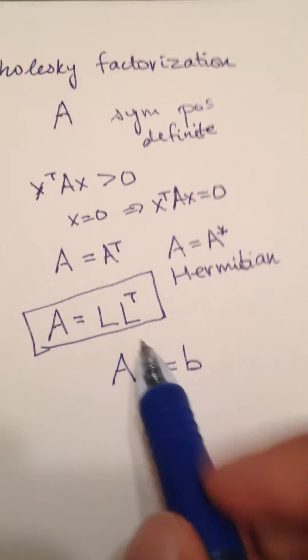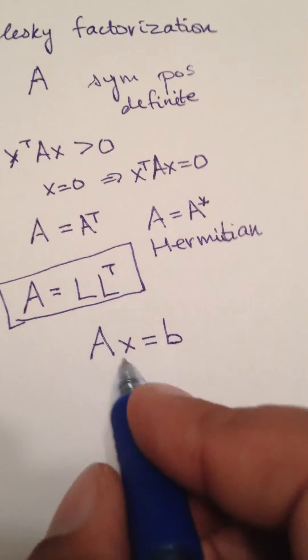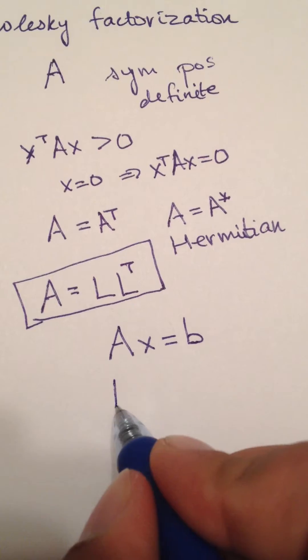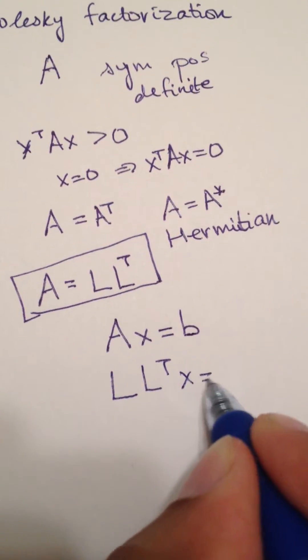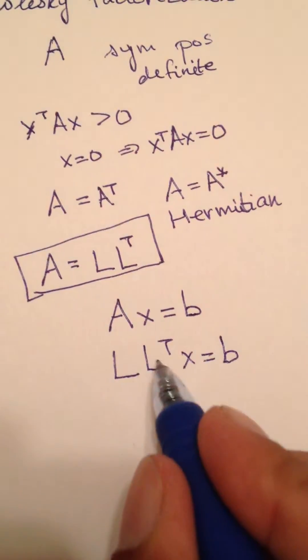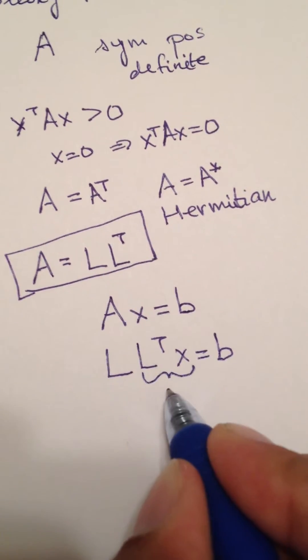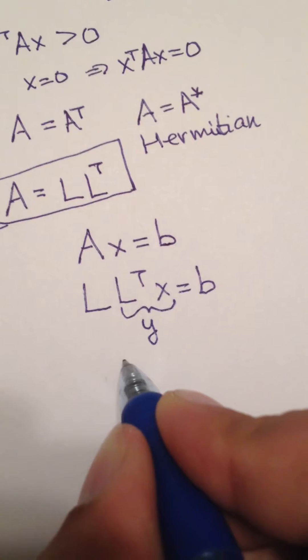And A satisfies this property of being symmetric positive definite. Then you can always factor into Cholesky, so you can always factor it as L L transpose X equals B. And once you factor, then you can call this variable Y and solve this set of equations.